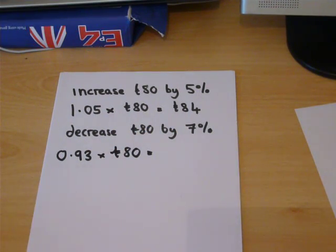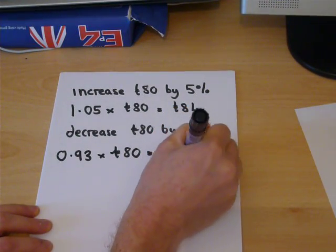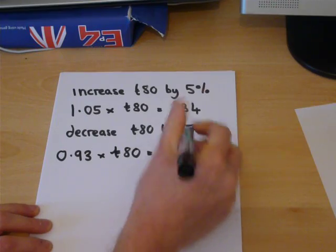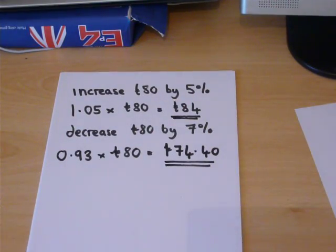on the calculator, we get 74 pounds and 40 pence. So, here we have two quick calculations to increase and decrease.